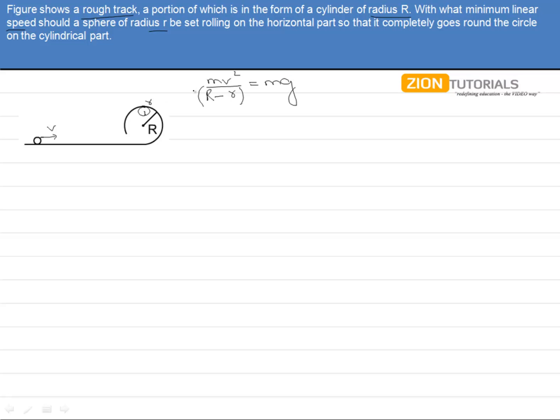We are taking the normal reaction to be zero because we need to find the minimum velocity. So this is the case. Let us take it as equation number 1. Now if this ball is being thrown with velocity v and it will be having a rotational motion like this, there will be no friction acting over the ball.